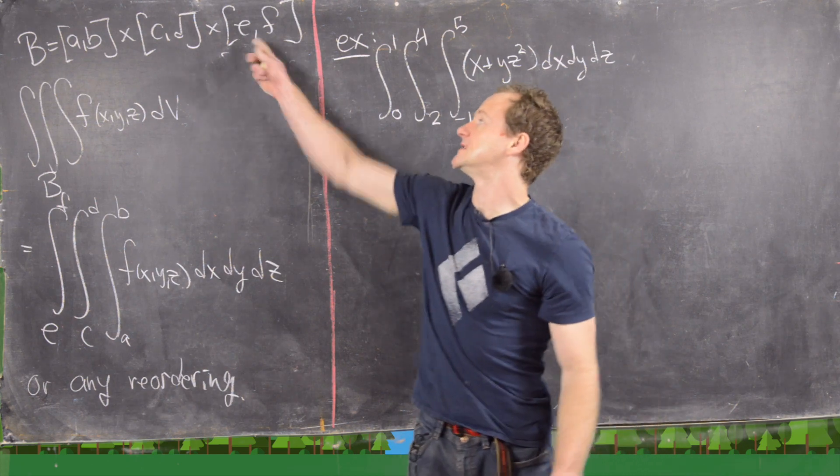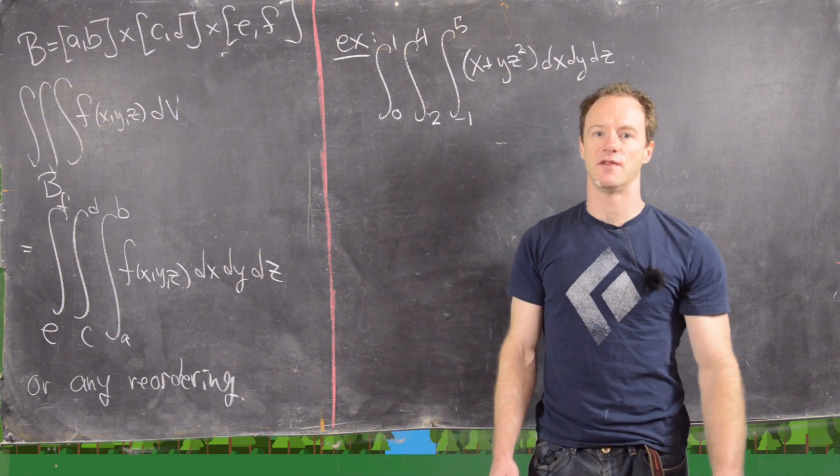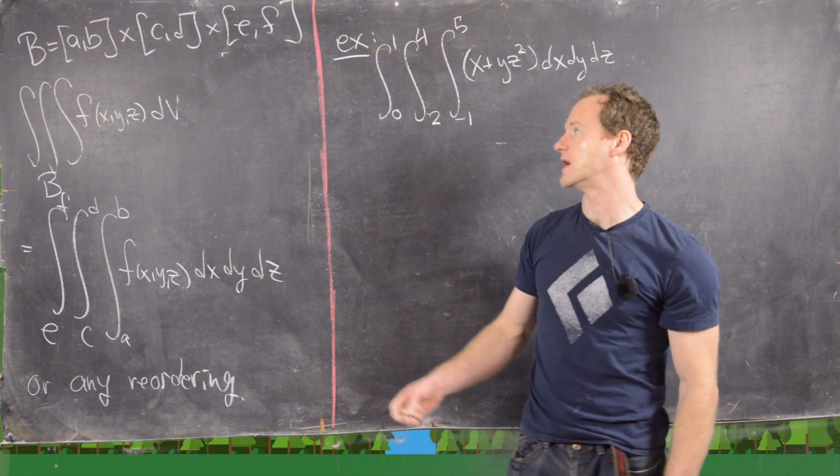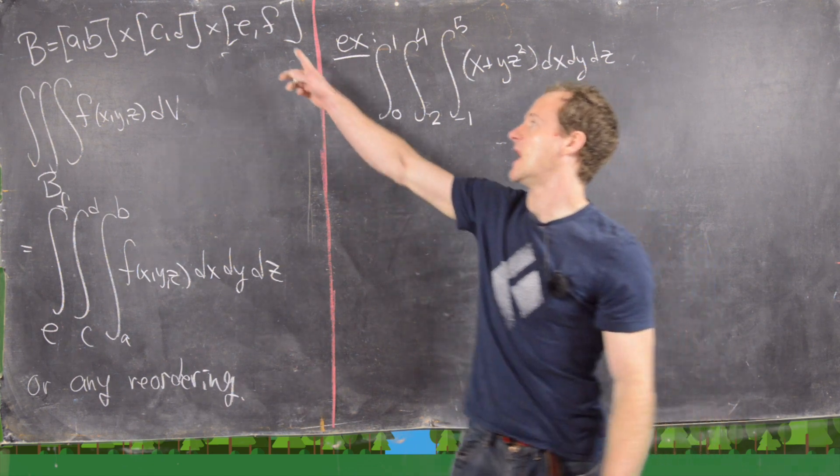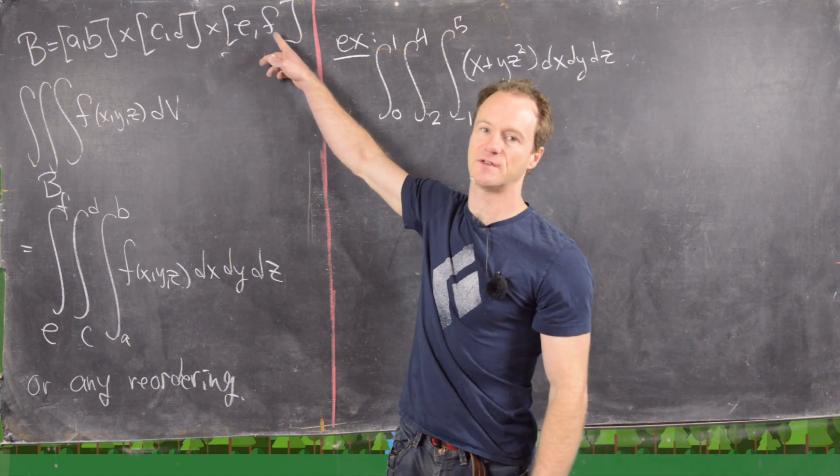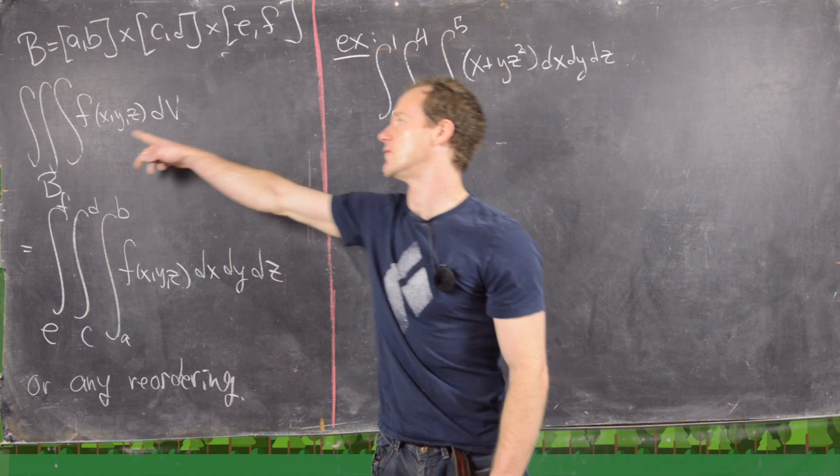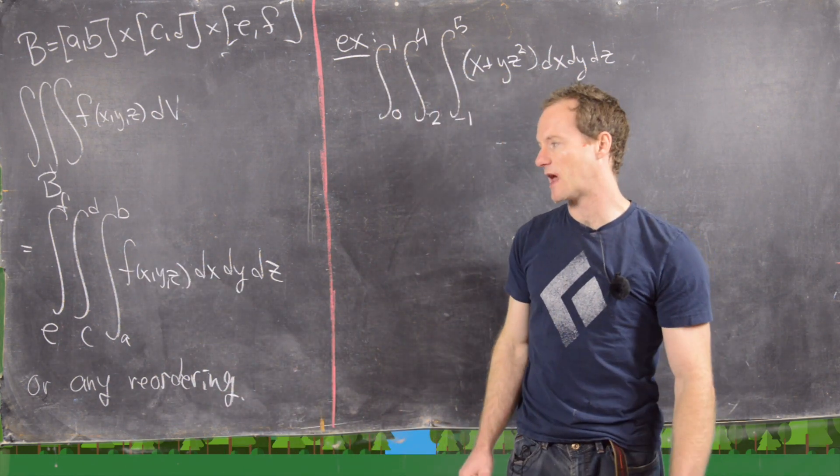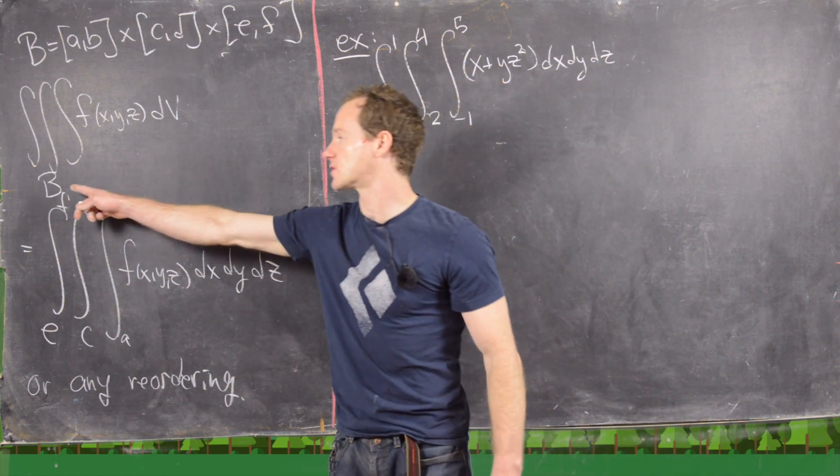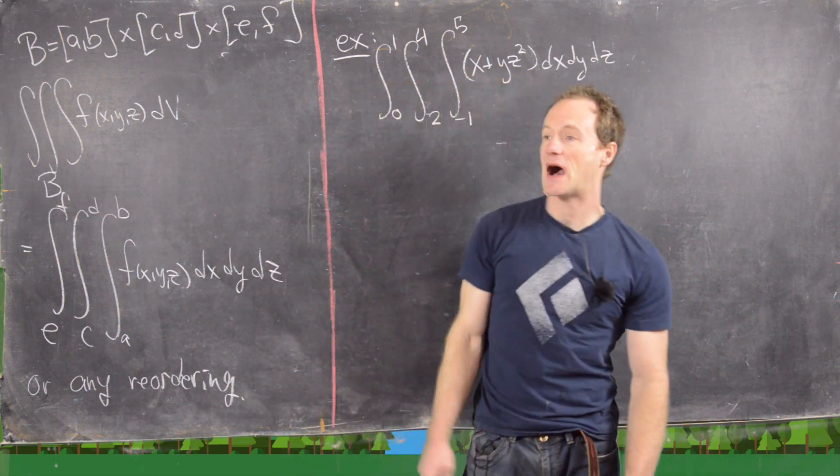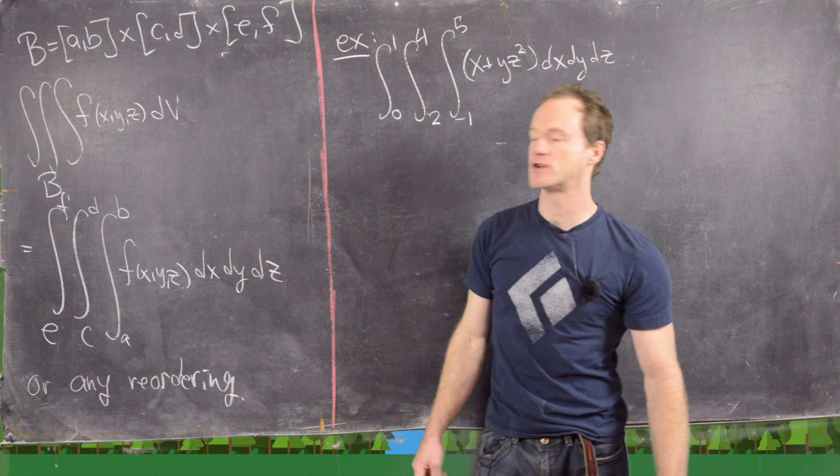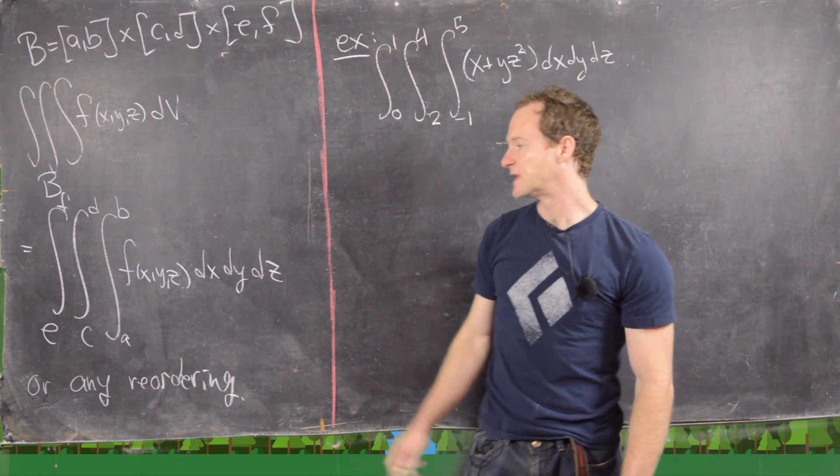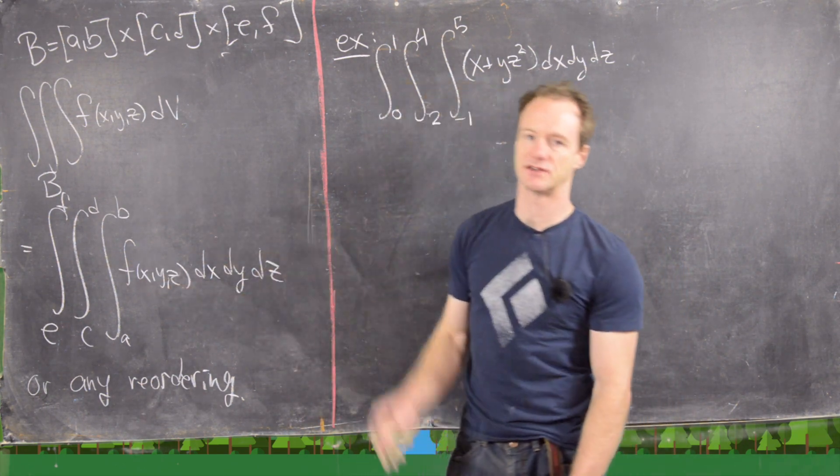And I know I'm using E not to mean the natural logarithm base but just to mean some constant, and I'm reusing this letter F to mean the largest z value and for our function. So it's a bit sloppy but I think it's okay in this context. So this triple integral over this box with this differential volume component is given by this iterated integral.